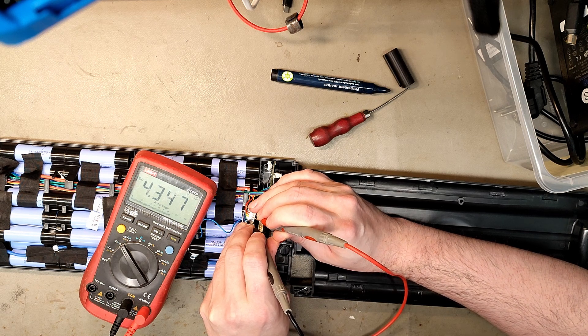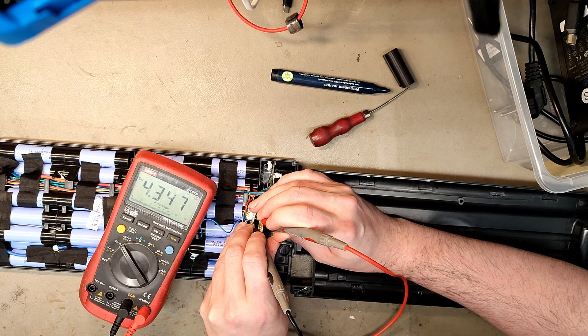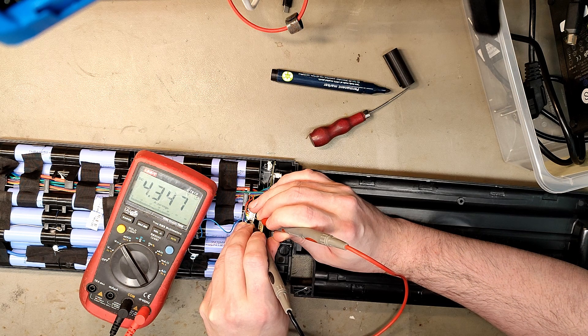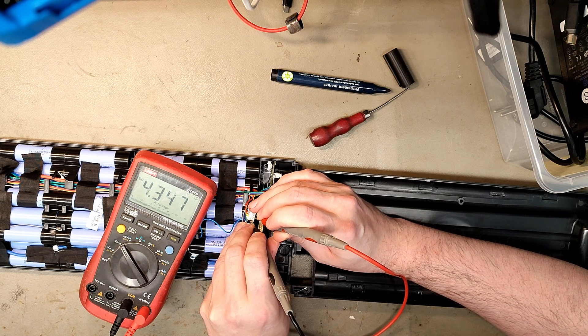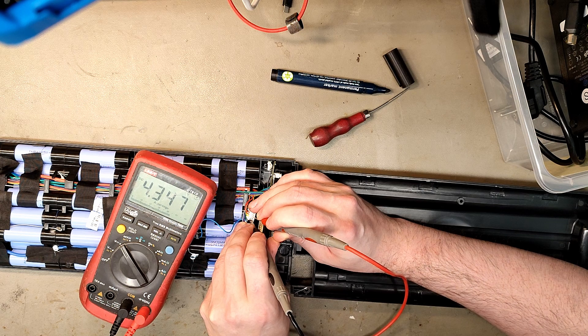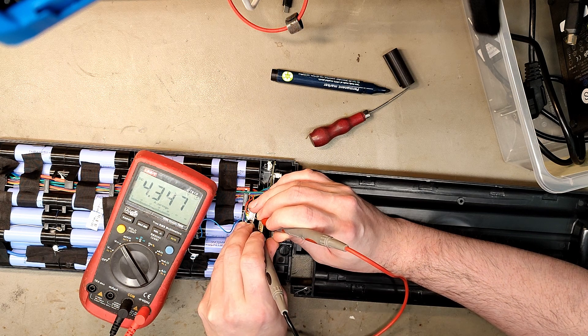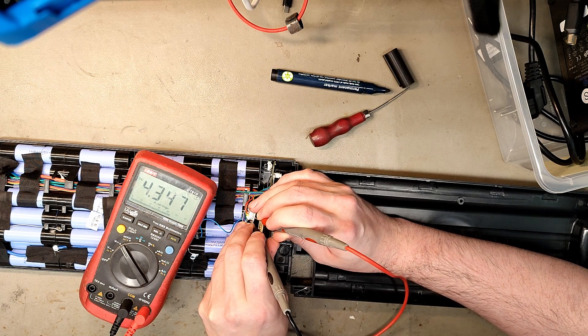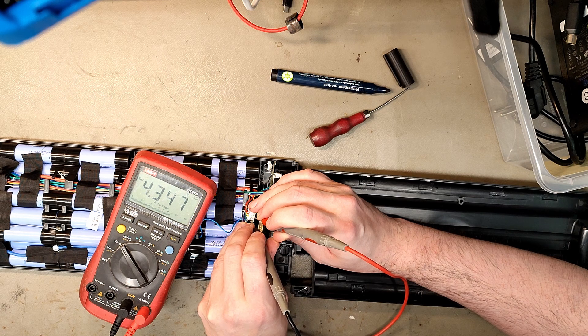...let the cells go up to 4.35V? These are not high-voltage cells, these are Samsung 29E. That's just scary. Maybe it's a defective BMS, or maybe it doesn't care.